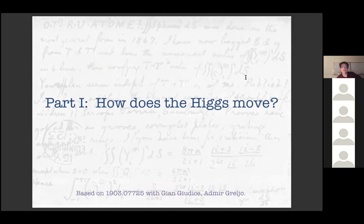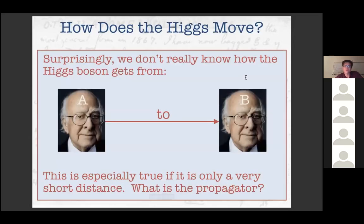I'll start with the Higgs, because this was actually the first paper and it's really how I started thinking about these things. The pheno application is to ask the question: how does the Higgs move? It's a sort of dumb question, but we like to think of questions you could discuss with someone on the street. Many questions about the Higgs are very difficult to have a short conversation about, but how does the Higgs interact with itself, how does it move — those are relatively simple ones.